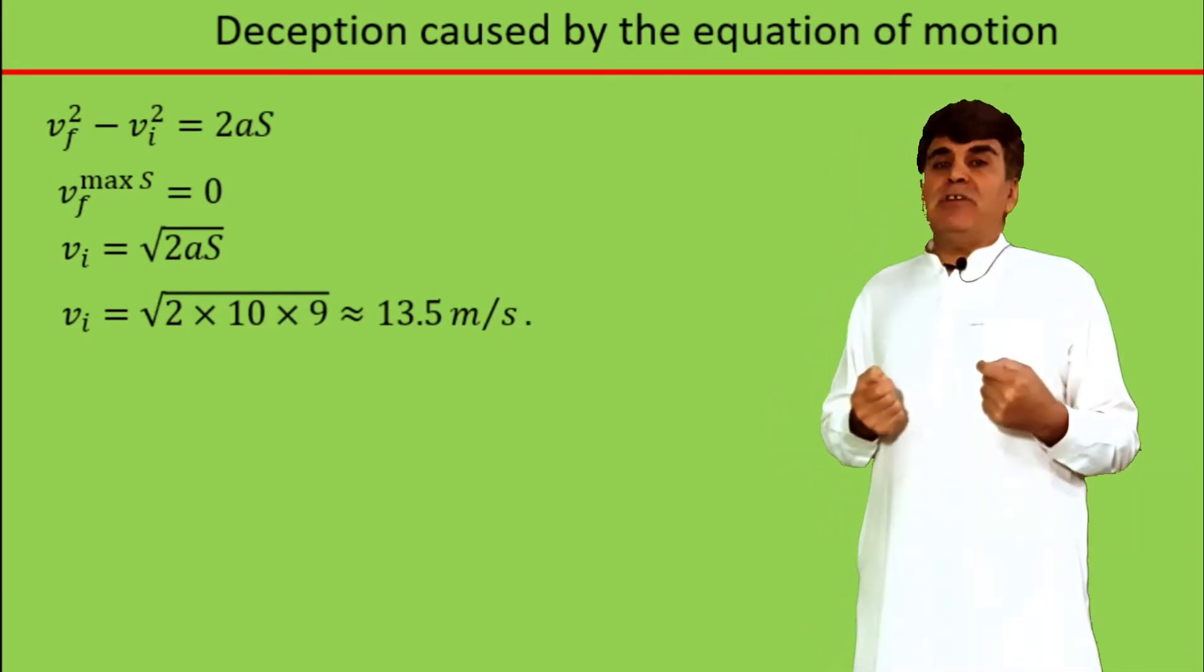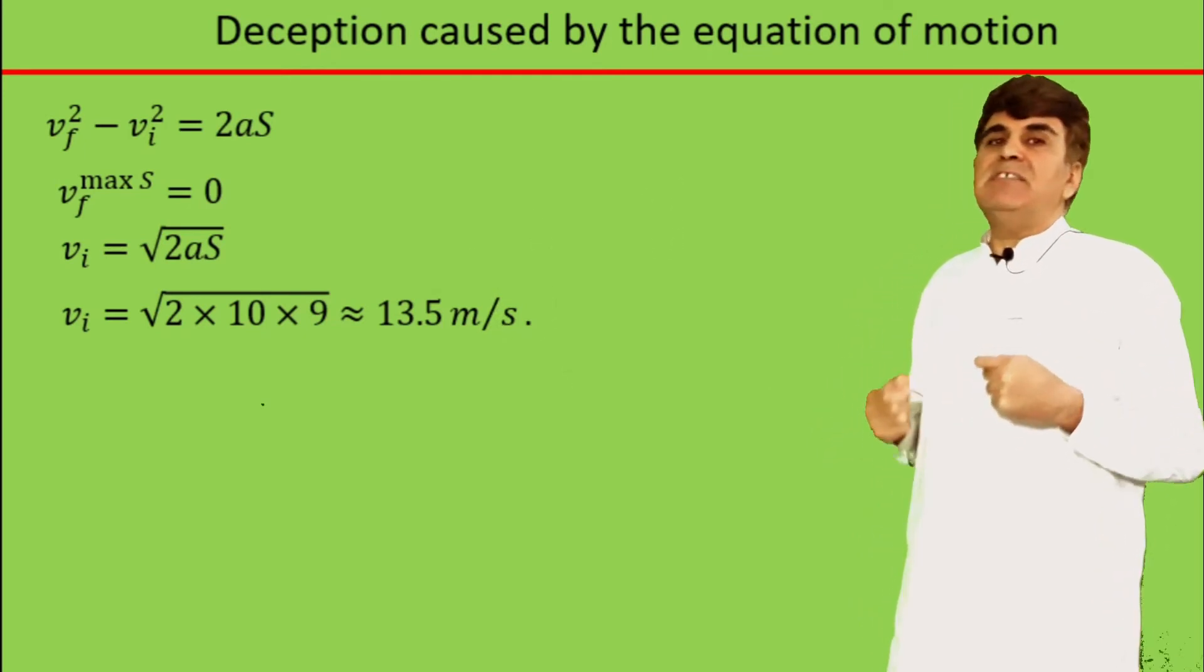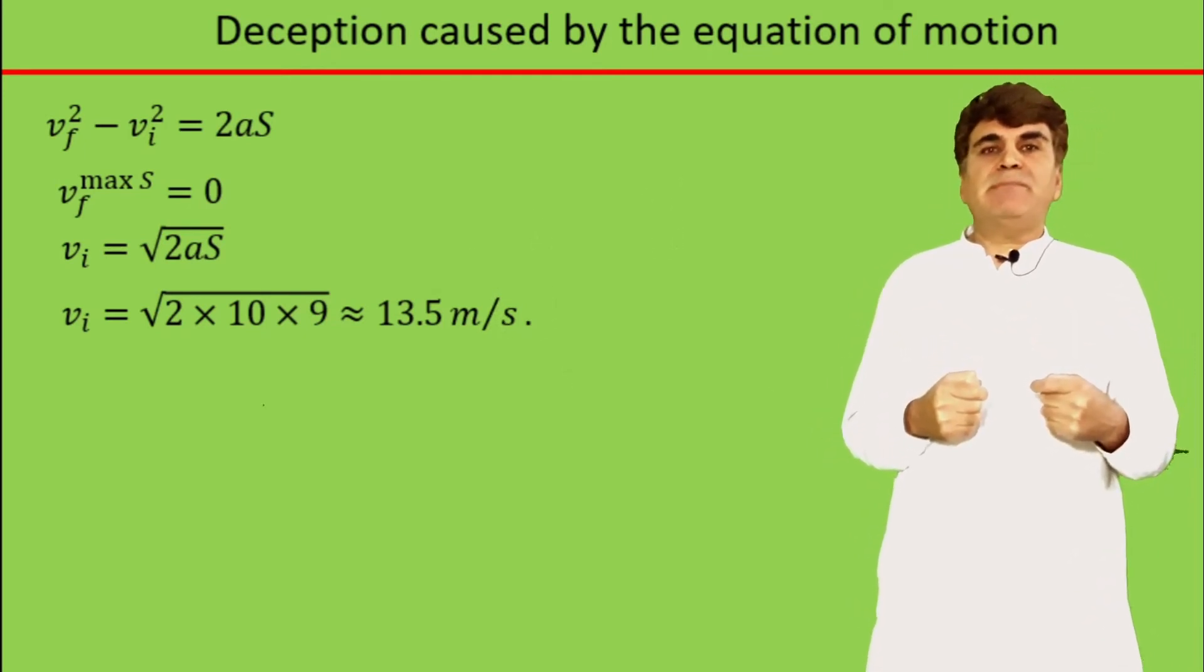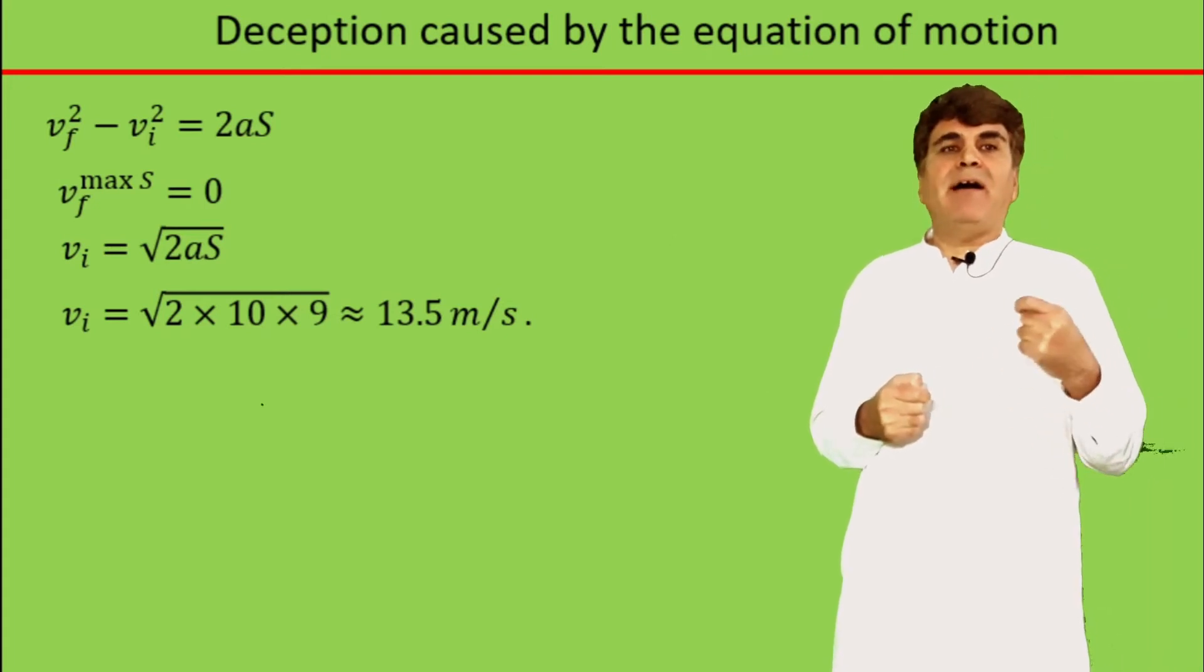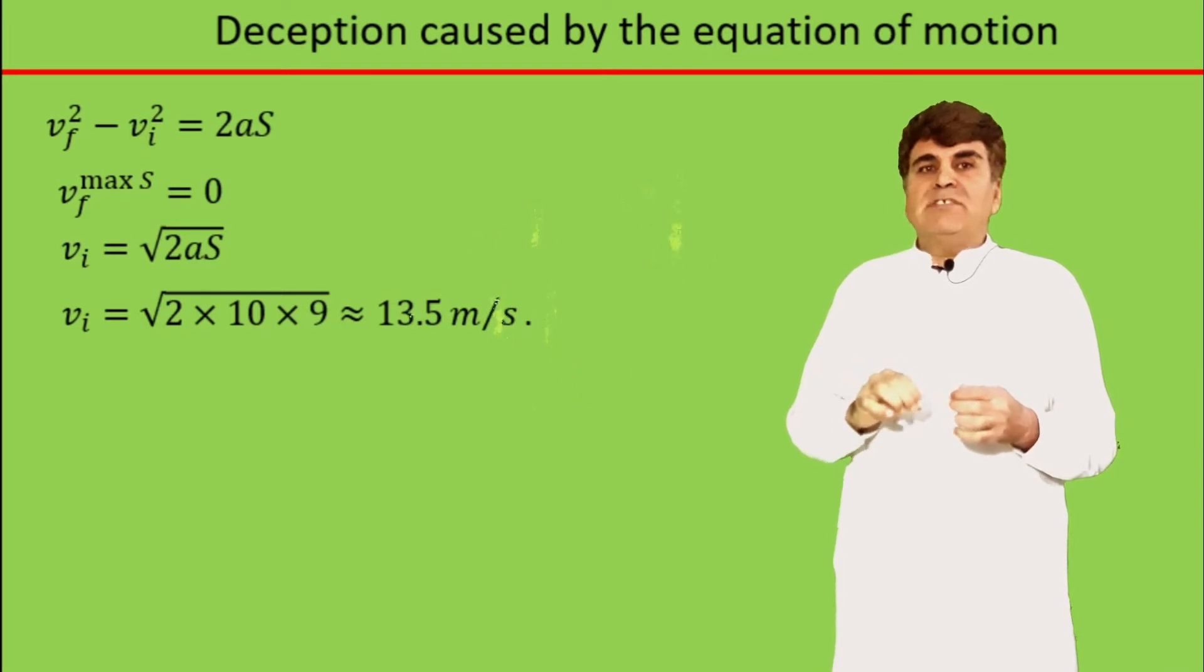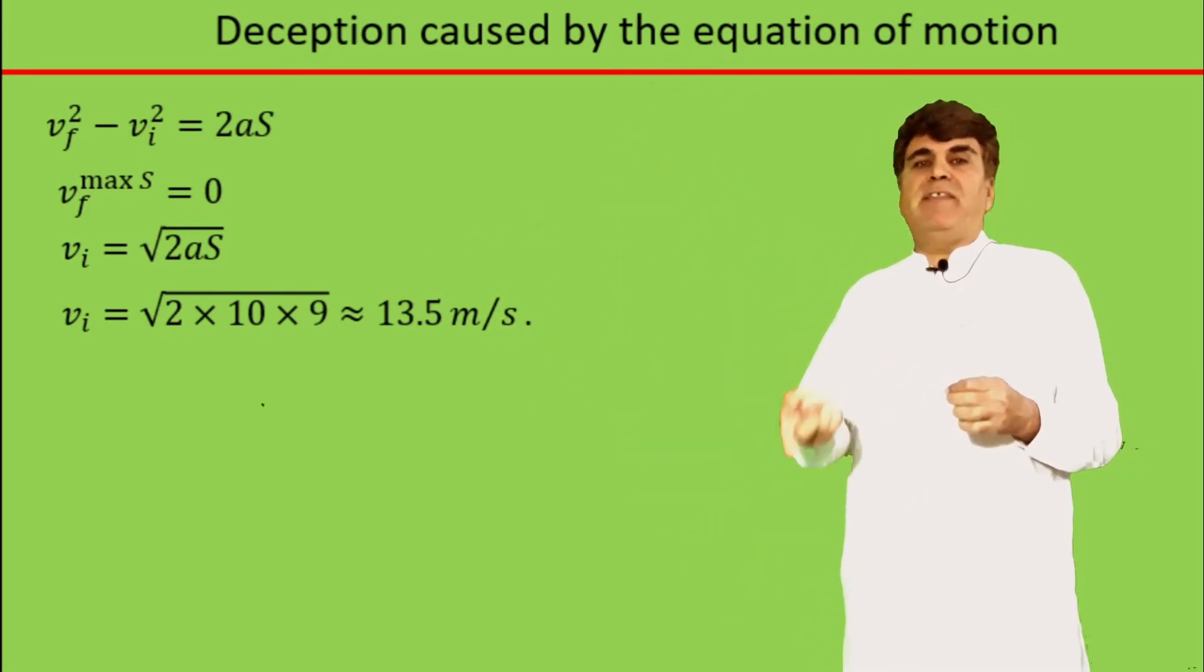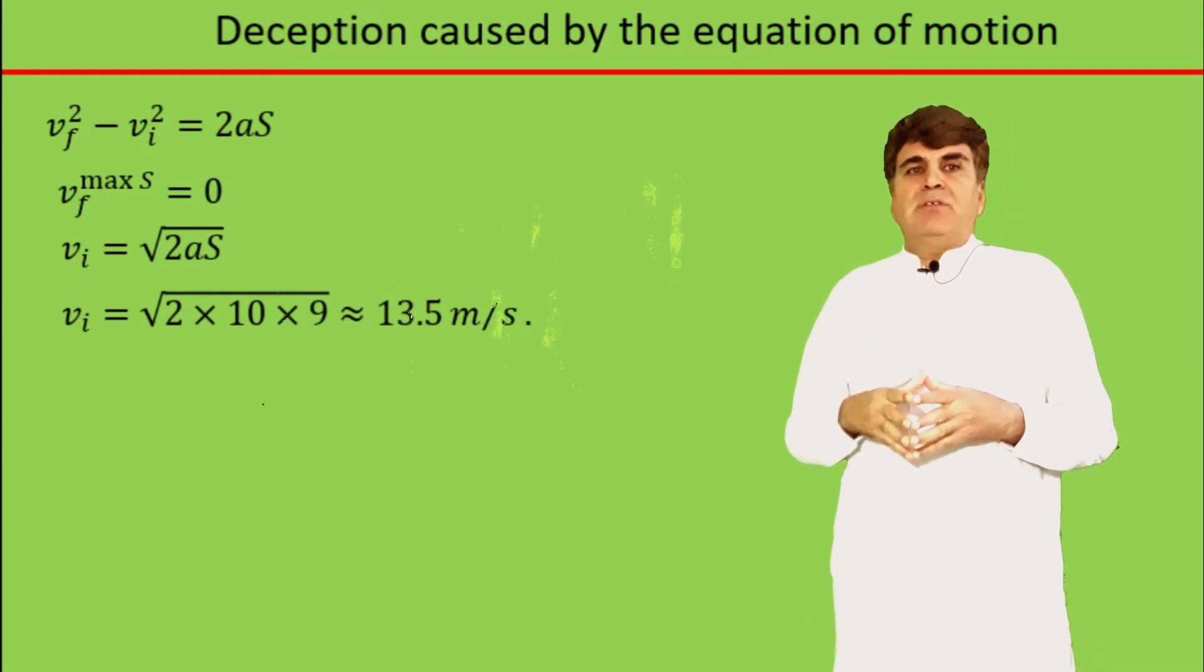This means that every particle with an initial velocity VI greater than 13.5 meters per second will be at the height of 9 meters twice in its flight. Once when it is moving in the upward direction and once when it is moving in the downward direction. To follow this more obviously, consider this figure.